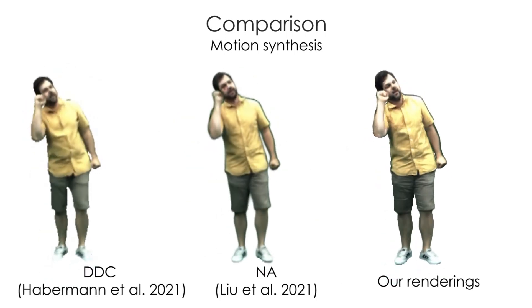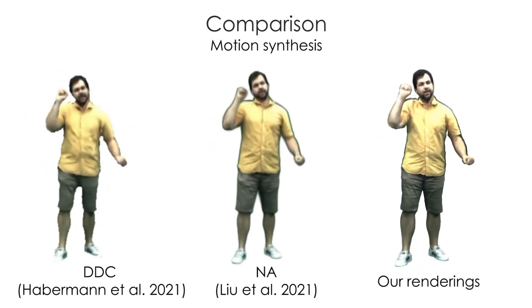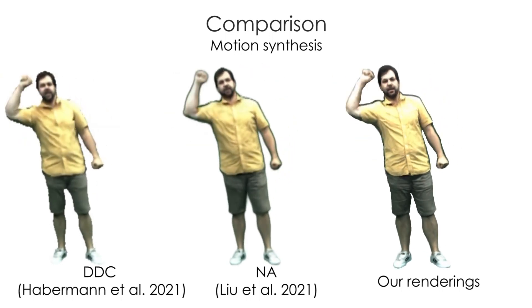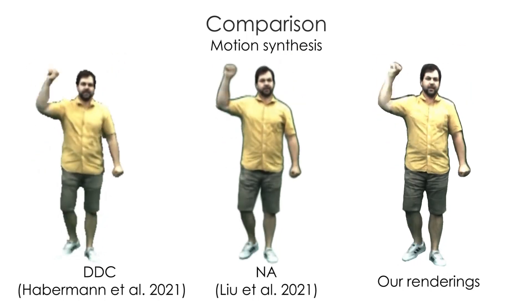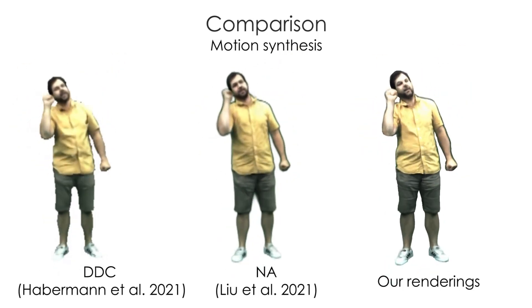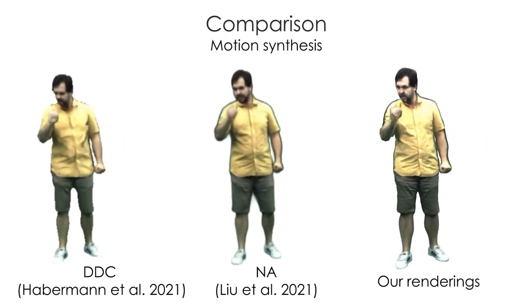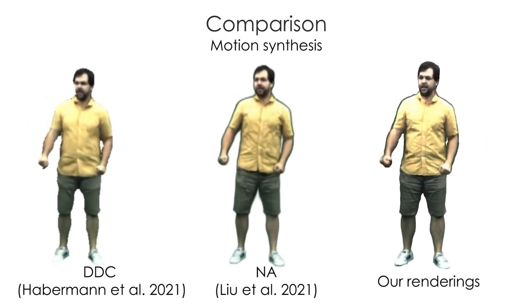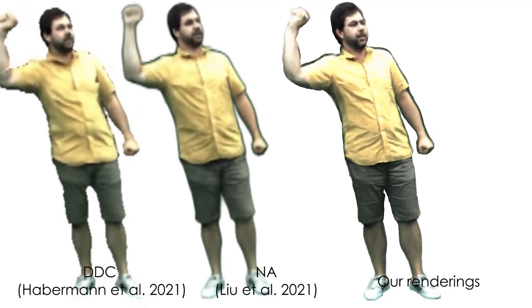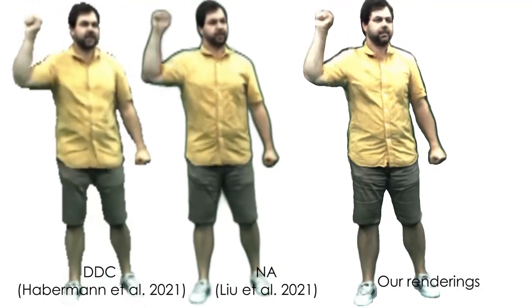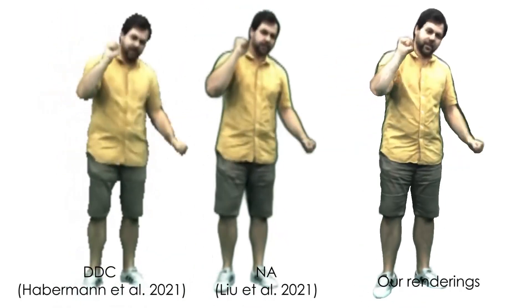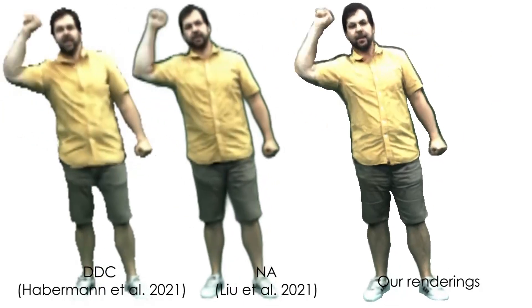Next, we compare to the recent state-of-the-art methods: Deep Dynamic Characters, or DDC for short, and Neural Actor. For DDC, we found that our method can recover appearance details, such as wrinkles, much better, leading to higher synthesis quality. Although Neural Actor performs better than Deep Dynamic Characters in terms of detailed synthesis, it still cannot reach the quality of our results. Moreover, their method can only work on tight types of apparel, while our method does not have such a constraint, since we jointly learn the surface deformations.